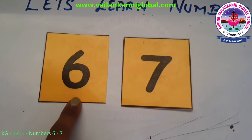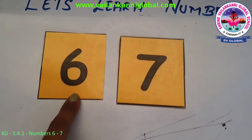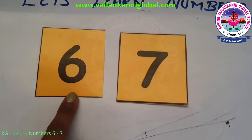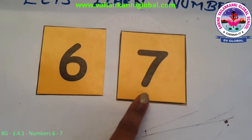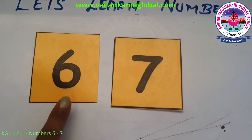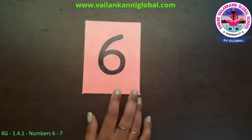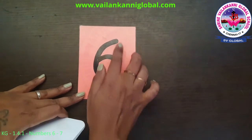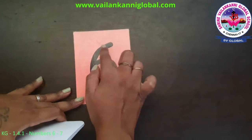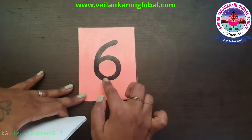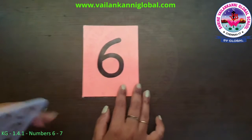So this is number six and this is number seven. What comes after six? It's seven. And what comes before seven? It's number six. Now let's see first number six. This is number six — a forward curve and a backward curve.